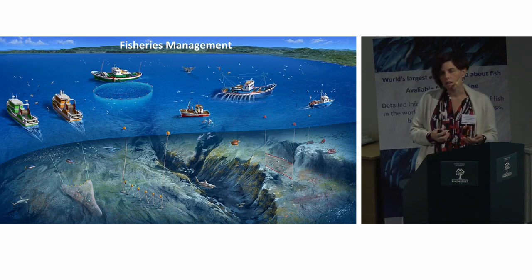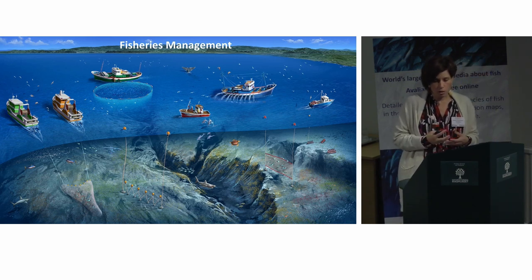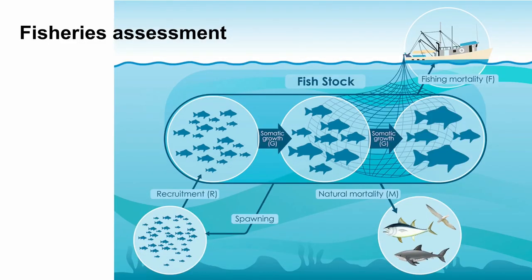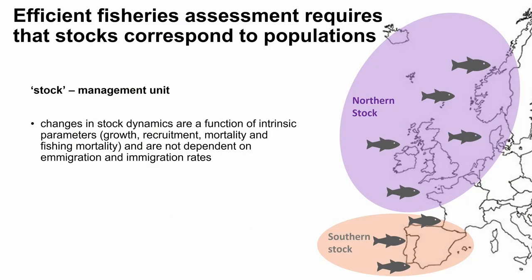One of the main things in fisheries management is assessing the status of fisheries. Several parameters are estimated in each fish stock — biomass, recruitment, growth, fishing mortality, and natural mortality — so we can make predictions about how that biomass will be affected by different fishing efforts. For a fisheries assessment to be effective, stocks need to be correctly defined as management units.